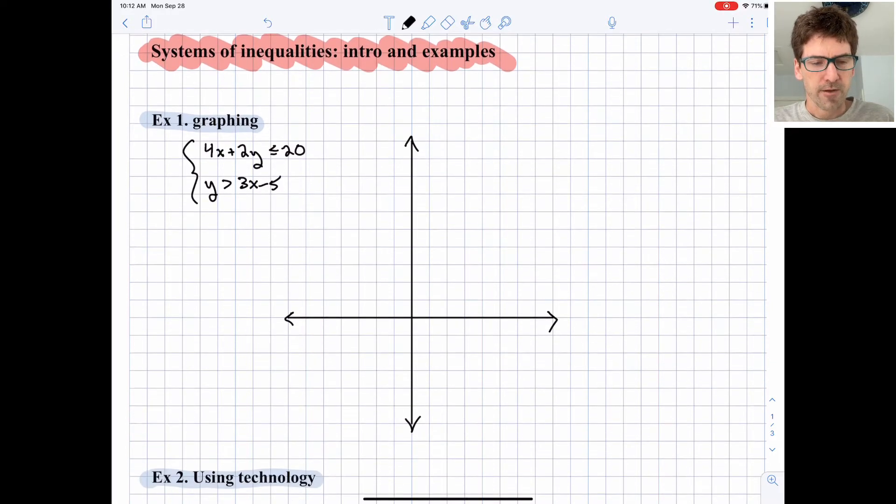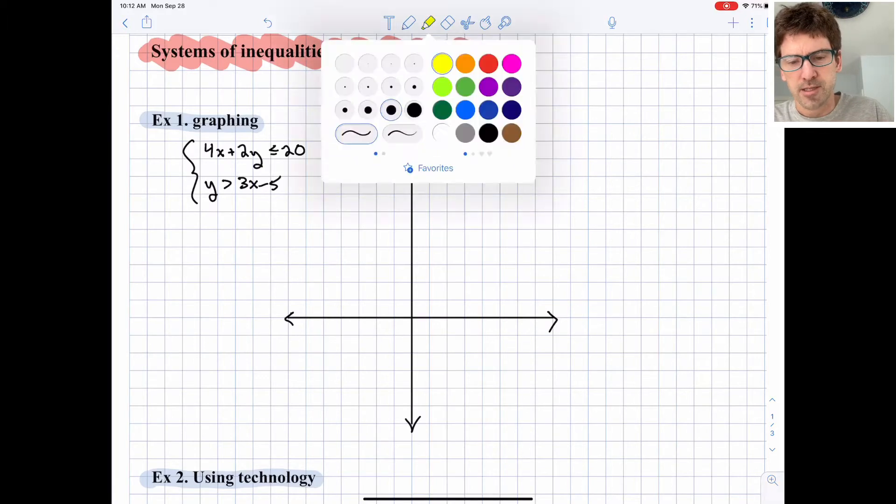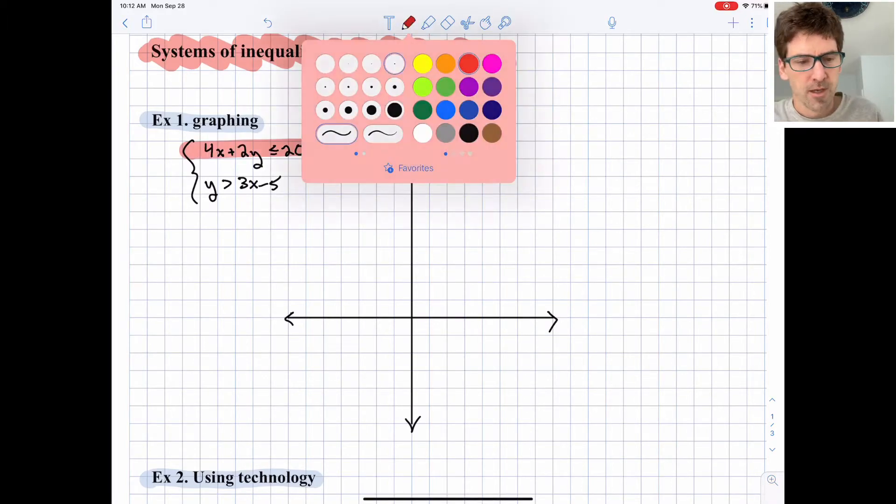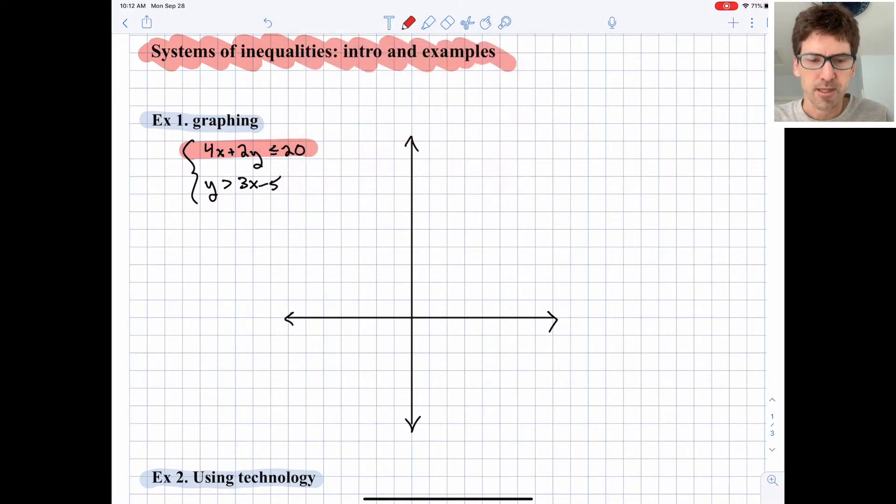We have a system of two inequalities here. The first one is 4x + 2y ≤ 20, and the second is y > 3x - 5. Let's graph both boundary lines. I'll graph the first one in red. That's set up in standard form, with the boundary line being 4x + 2y = 20.